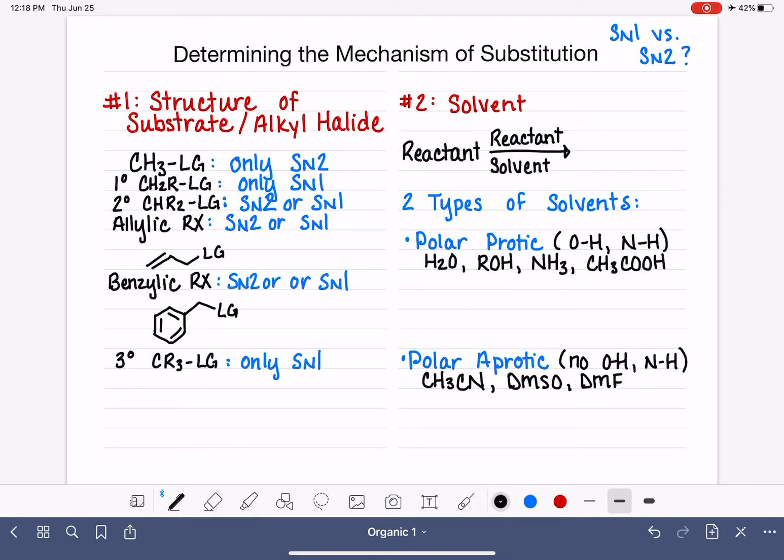Those are both abbreviations. Even though S and O are atoms, DMSO stands for dimethyl sulfoxide and DMF stands for dimethyl formamide. These are polar aprotic solvents commonly used in the SN2 reaction.